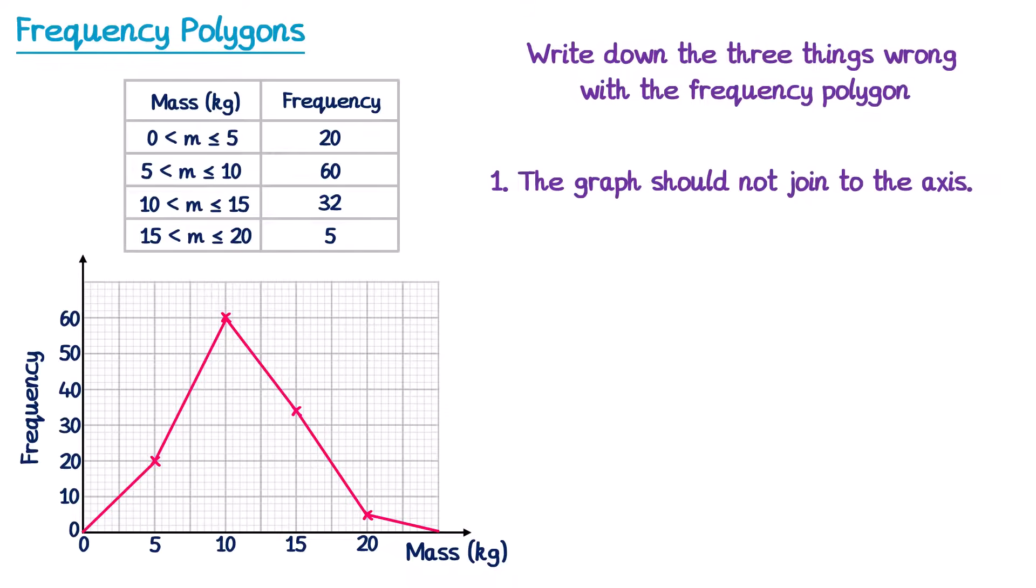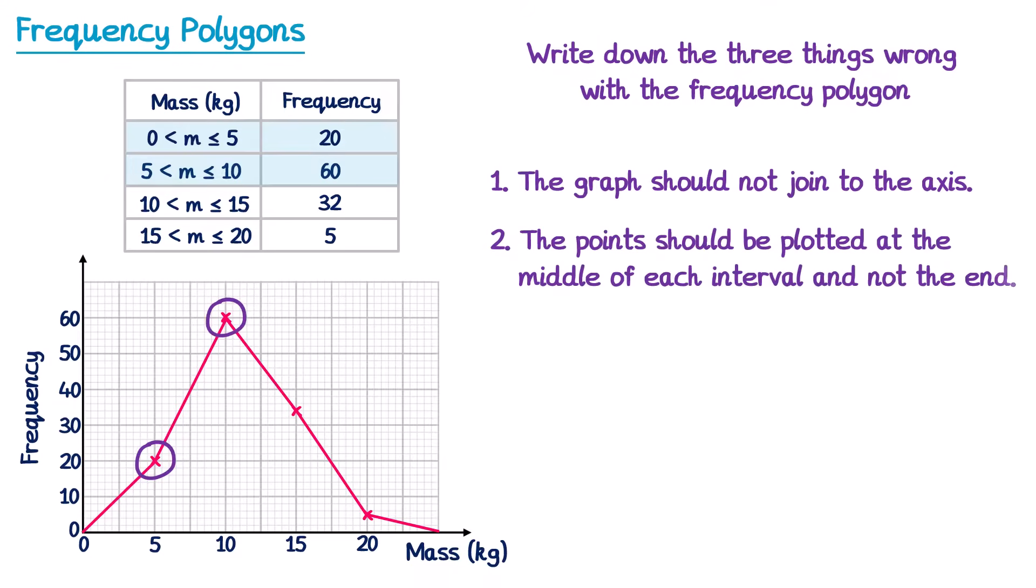The next mistakes are perhaps a little harder to spot. Let's imagine we were drawing this frequency polygon. For the first group it goes from 0 to 5 with a frequency of 20. They have plotted a point though at 5, 20, which is not the midpoint of this group, that's the end point. The next group goes from 5 to 10 with a frequency of 60, and they've plotted this point at 10, so again not in the middle. So we could say for the second mistake the points should be plotted at the middle of each interval and not at the end.